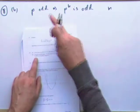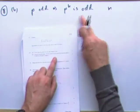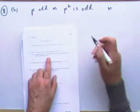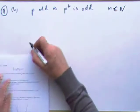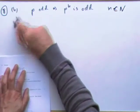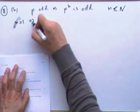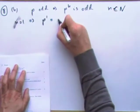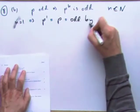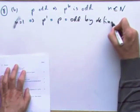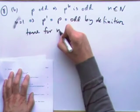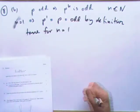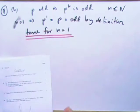Part b: prove by induction that if p is an odd integer, then pⁿ is also odd for all positive integers n. Test for n = 1: p to the power 1 is just p, which is odd by definition. So it's true for n = 1 — that pegs it down.